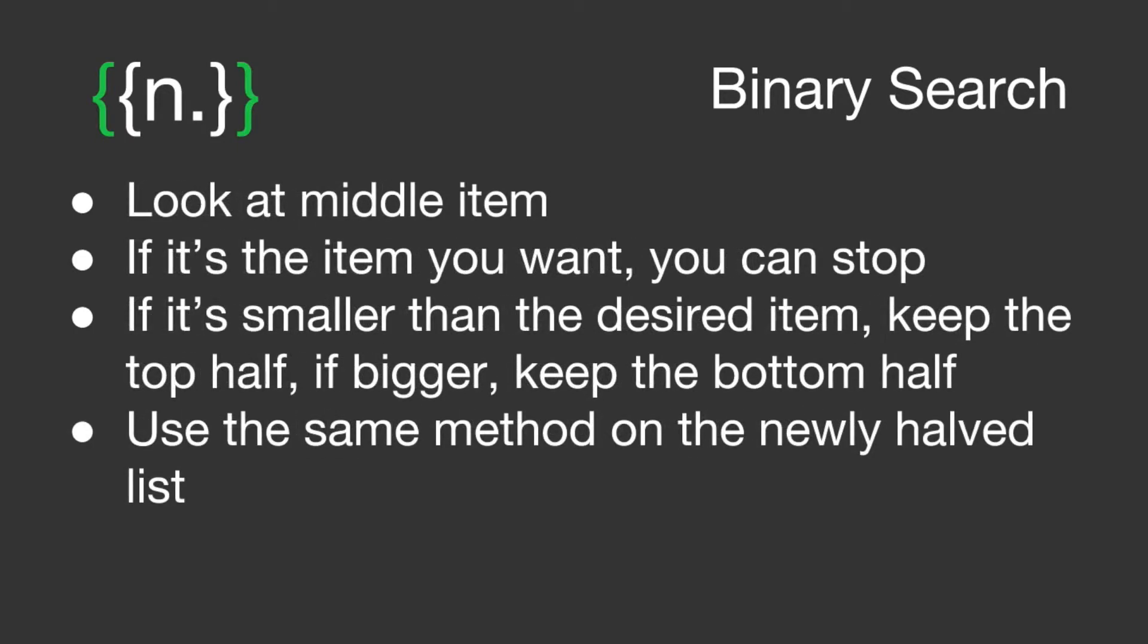So how does this algorithm work? Firstly we look at the middle item. Our base case is if it's the item you want you can stop looking. That would be nice if it always worked like that. The next step is if it's smaller than the desired item keep the top half, if it's bigger keep the bottom half. So we know which side of the data the item is on by looking at one single point and we keep doing that.